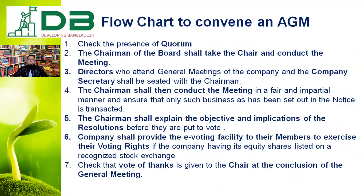In the case of an AGM, as an entrepreneur, how you will conduct your AGM — first check the quorum. One-third is the general quorum, so verify whether one-third of your persons, investors, or members are present. If the quorum is fulfilled, then the chairman of the board of directors will conduct the AGM along with the company secretary.